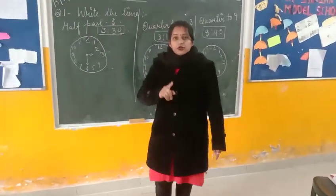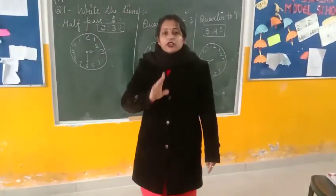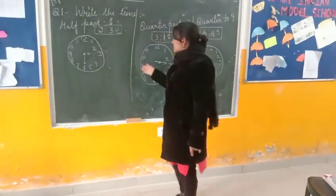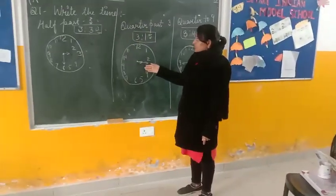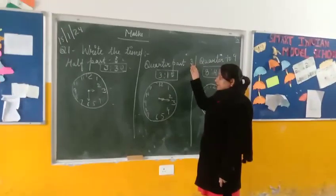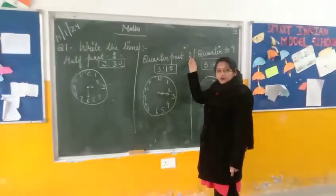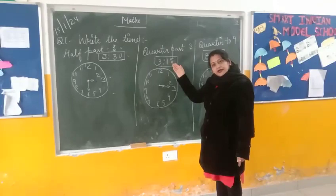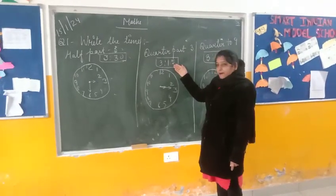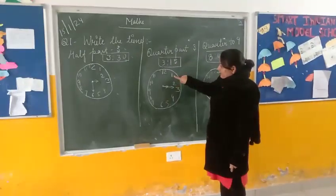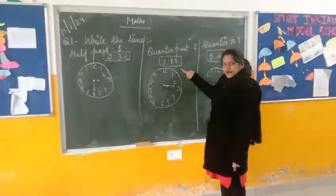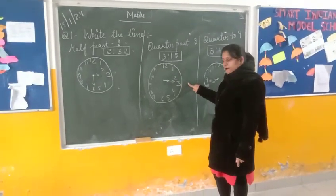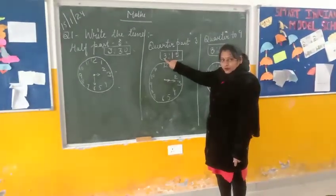Half past 3 means 3:30 — saare teen. The next part: your watch is 4:30. Half past 3 means 3:30. It takes 15 minutes. 1 takes 5 minutes, 2 takes 10 minutes, 3 takes 15 minutes.